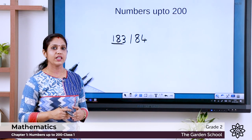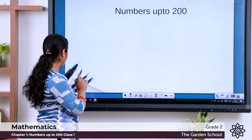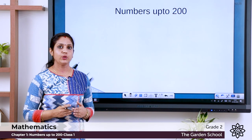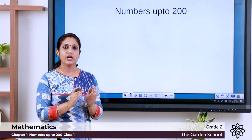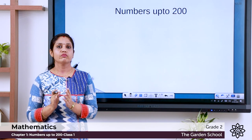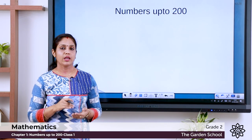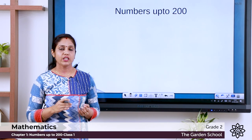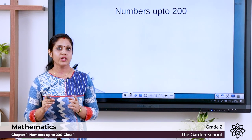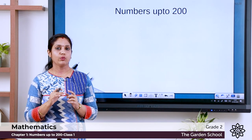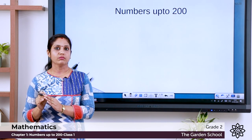Now let us learn the number that comes between. What do you mean by 'between'? That comes in the middle. Suppose 1, 2, 3 — the number that came in between is 2. Another example: 20, 21, 22 — the number that comes in between is 21. Now if I say 12, 14 — something is missing. 12, 13, 14 — the number missing is 13, so 13 comes in between.